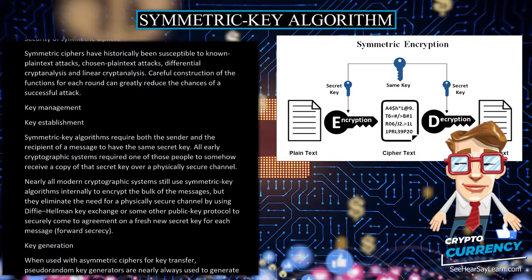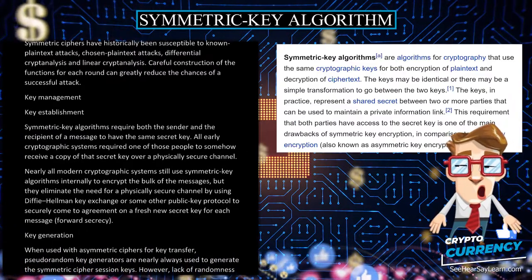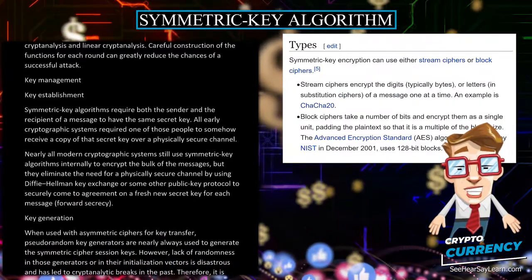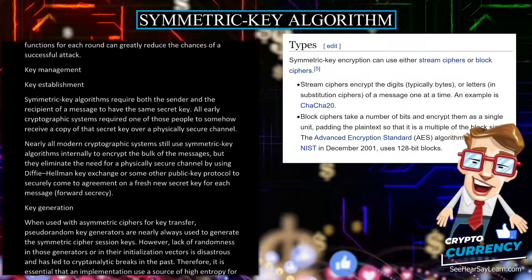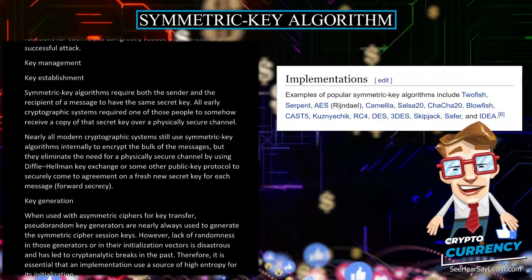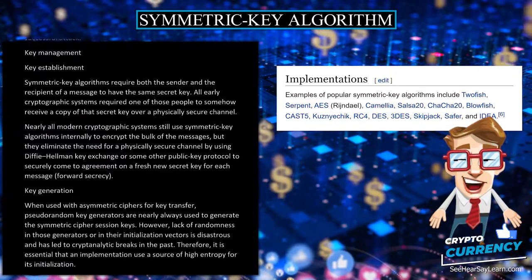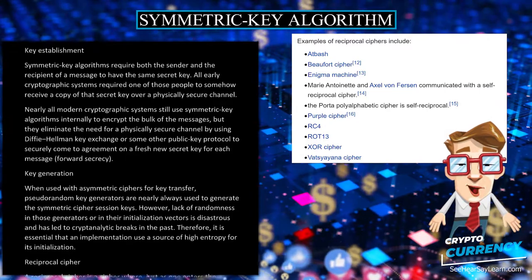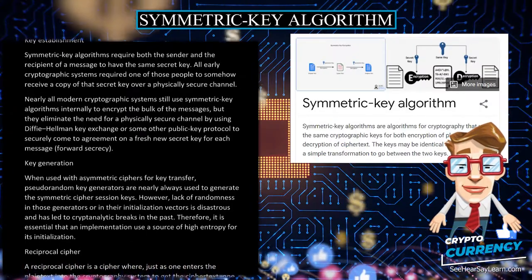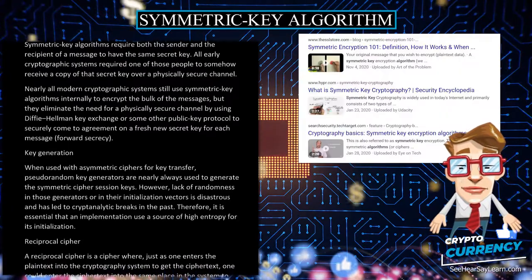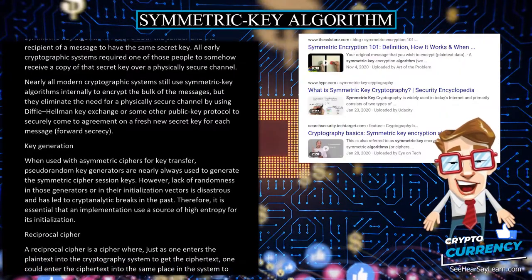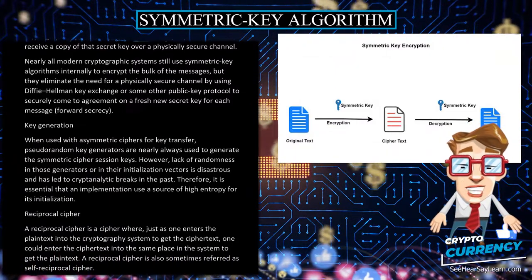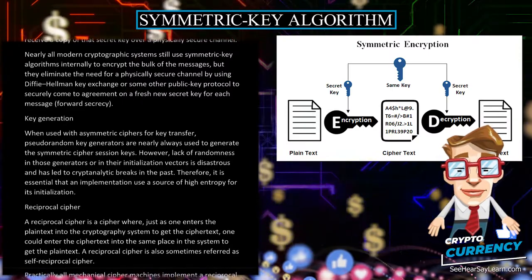Key Management — Key Establishment: Symmetric key algorithms require both the sender and the recipient of a message to have the same secret key. All early cryptographic systems required one of those people to somehow receive a copy of that secret key over a physically secure channel. Nearly all modern cryptographic systems still use symmetric key algorithms internally to encrypt the bulk of the messages, but they eliminate the need for a physically secure channel by using Diffie-Hellman key exchange or some other public key protocol to securely come to agreement on a fresh new secret key for each message, forward secrecy.